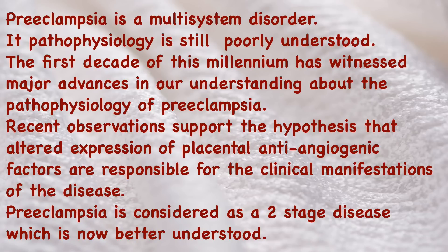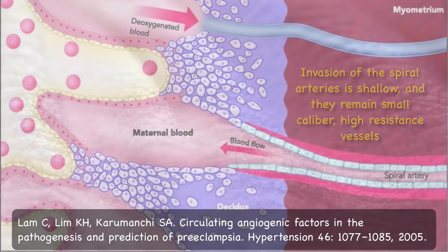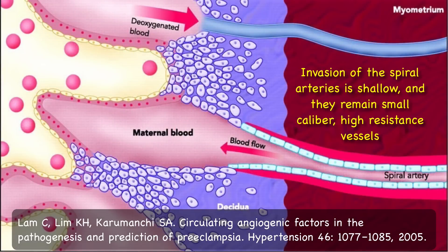Pre-eclampsia is considered as a two-stage disease, which is now better understood. In normal pregnancy, cytotrophoblasts change their phenotype into endothelial cells and line the spiral arterioles by destroying their intimal and muscular cord, making them low-resistance vessels, thus increasing blood flow across their lumen. In pre-eclampsia, however, the invasion of the spiral arteries by cytotrophoblasts is incomplete.